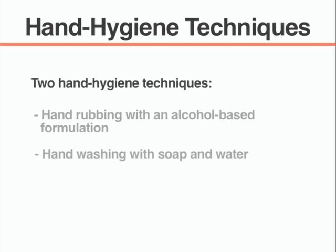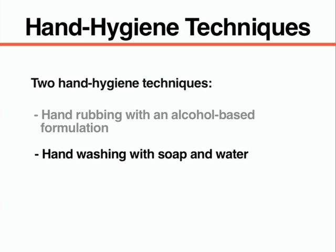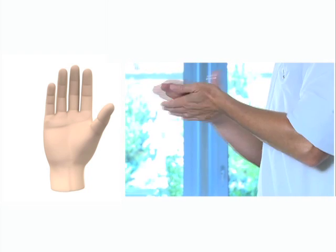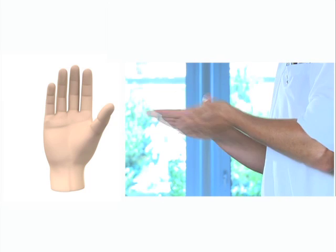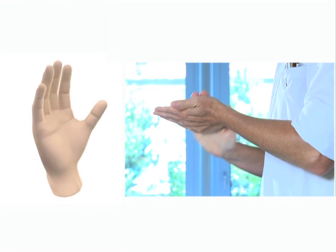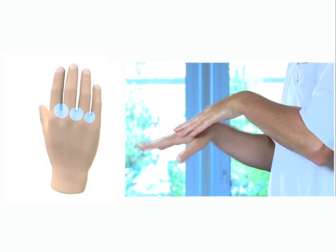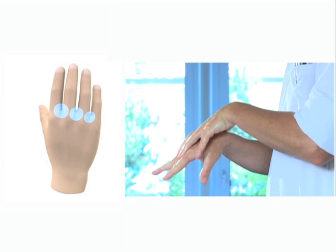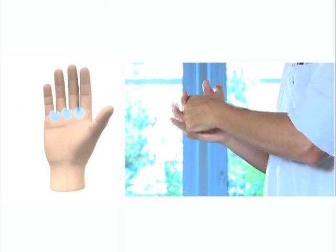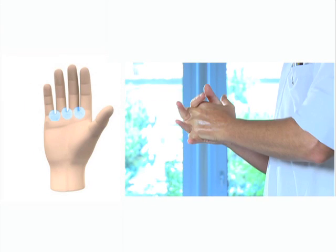There are two recognized techniques for performing hand hygiene: hand rubbing with an alcohol-based formulation and hand washing with soap and water. To perform hand rubbing, apply a palmful of hand rub formulation to a cupped hand and rub your hands together to cover all surfaces, then rub your hands again palm to palm. To reach the dorsal interdigital area, rub the fingers of one hand over the dorsum of the other and interlace your fingers.